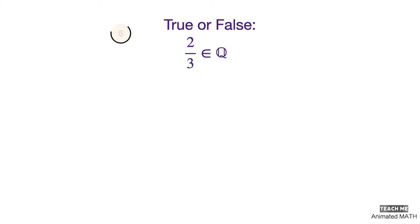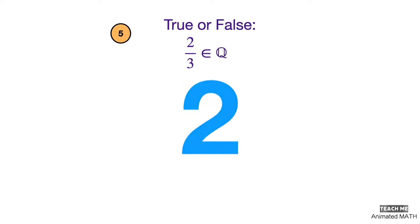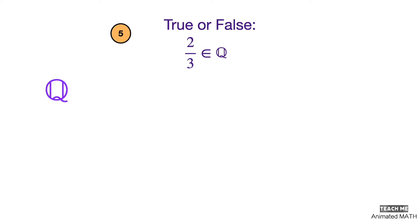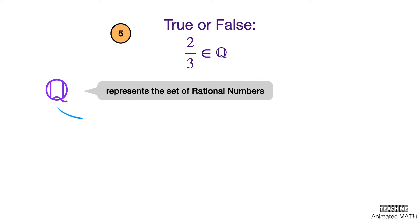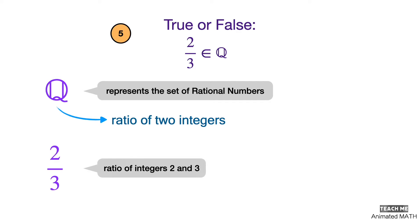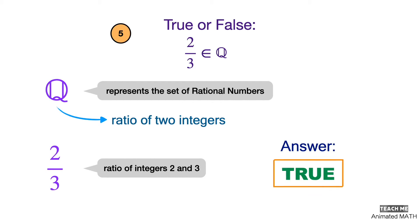Two-thirds is an element of Q. Q represents the set of rational numbers, which can be expressed as a ratio of two integers. Two-thirds is the ratio of integers 2 and 3, so the answer is true.